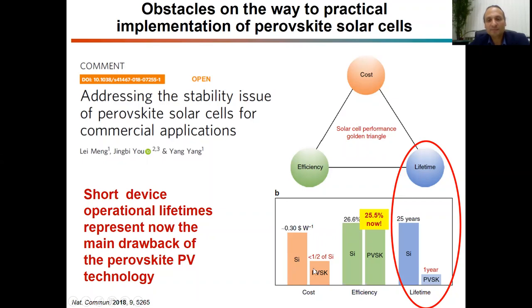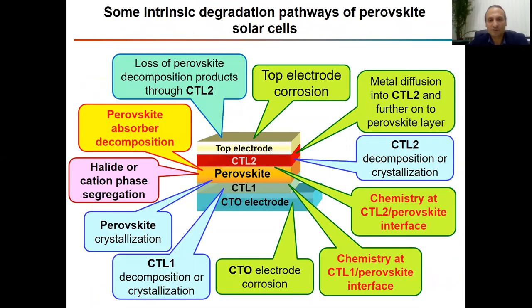Perovskite solar cells are expected to be much cheaper compared to silicon solar panels because perovskite semiconductors are solution-processable, and therefore printing and coating technologies can be implemented in production. Therefore, the low operational stability of perovskite solar cells currently presents the main obstacle for practical implementation of this technology.